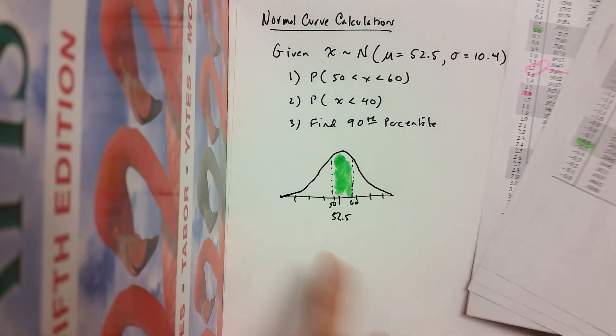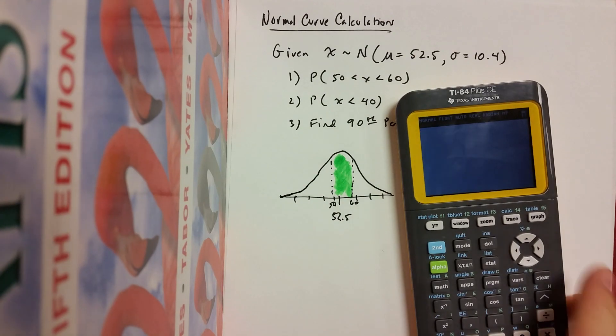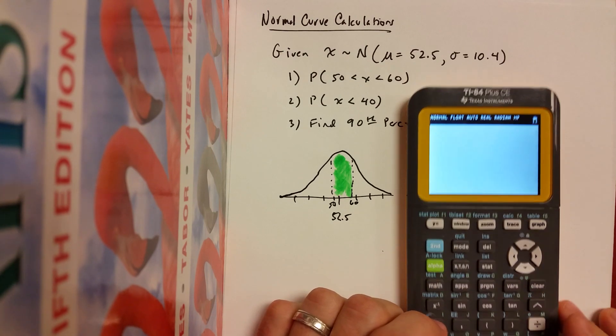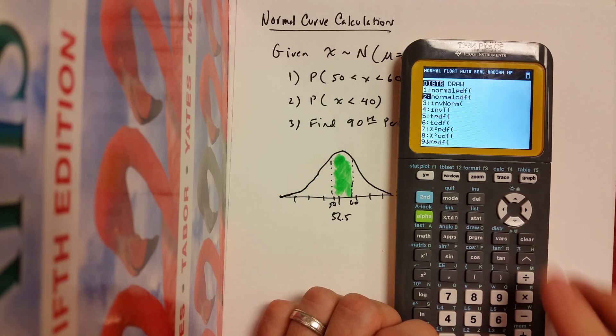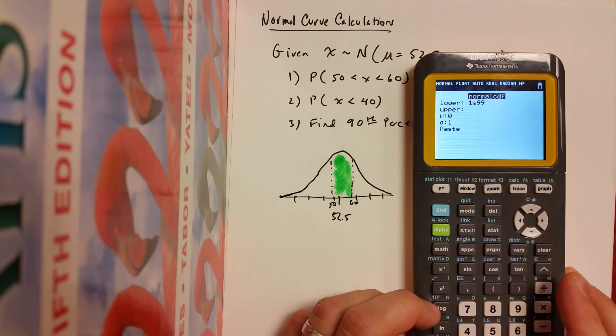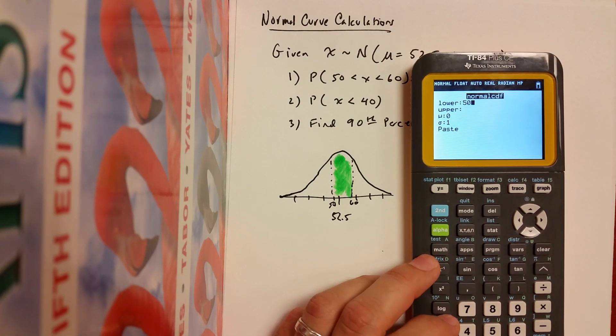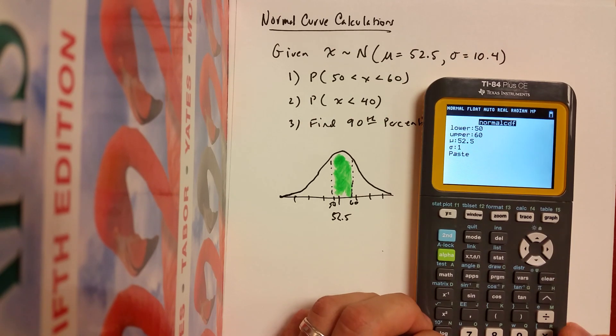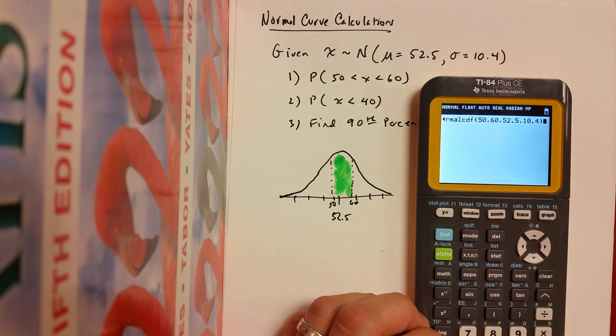So I could convert 50 and 60 to Z-scores and then look stuff up with this table, but like I said, I'm kind of too lazy for that. So here's how we could do it in the calculator directly. It's very nice. You just hit second vars, and that takes you to these distributions. The one we want is normal CDF. That stands for the normal cumulative distribution function. We'll click on that guy, and then we'll just put in some information. If you have the stat wizard, we can just plug this in directly. We can say the lower boundary would be 50. The upper boundary would be 60. The mean would be 52.5, and the standard deviation would be 10.4.